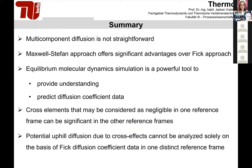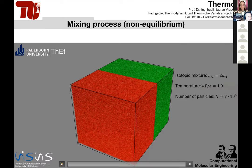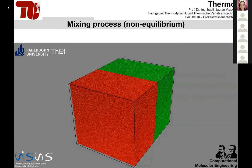In conclusion: multi-component diffusion is not straightforward given the many different diffusion coefficient types. The Maxwell-Stefan approach offers advantages over the Fick approach. Molecular dynamics simulation can provide understanding and predict diffusion coefficient data. Cross elements that may seem negligible in one reference frame can be significant in another, and when effects like uphill diffusion are estimated, one should look more broadly across reference frames. Thank you, and I am happy to answer questions.